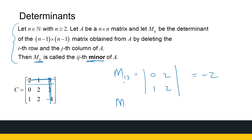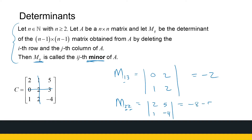For M_22, the minor is the determinant of the matrix after eliminating row 2 and column 2. That leaves [2, 5; 1, -4], giving minus 8 minus 5, which is minus 13.